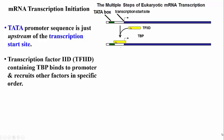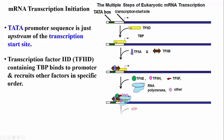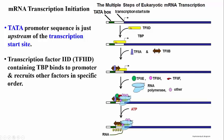The first protein to bind the promoter in this animation is called transcription factor TF2D. This starts a sequence of protein bindings, bringing other transcription initiation factors to the promoter in a specific order.